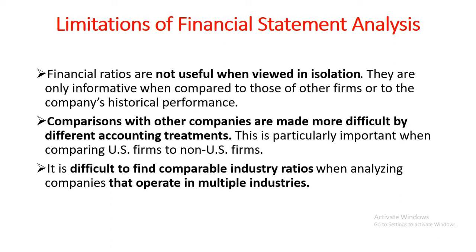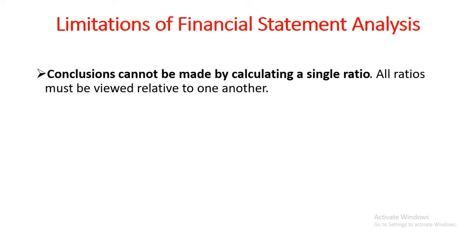It is also very difficult to find a comparable industry ratio if we analyze a company that operates in multiple industries. For example, many companies have operations in multiple industries — a company might have operations in pharmaceuticals and at the same time in the textile industry, making it difficult to find a comparable industry benchmark.